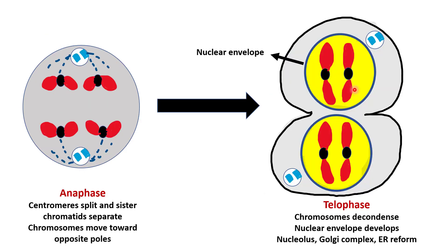The next phase is Anaphase. Here centromeres split and sister chromatids separate. After separation, the sister chromatids — now called chromosomes — move toward opposite poles of the cell.